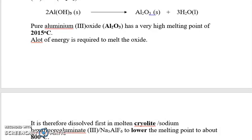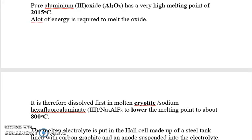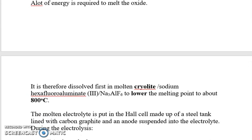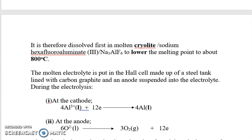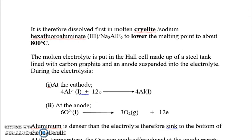Pure aluminium oxide has a very high melting point — over 2015 degrees Celsius — and because of this, a lot of energy is required to melt it. That is why the process of extraction of aluminium is relatively more expensive. Therefore, it is dissolved in molten cryolite. Molten cryolite is used to lower the melting point to about 800 degrees Celsius, cutting down the cost of production.